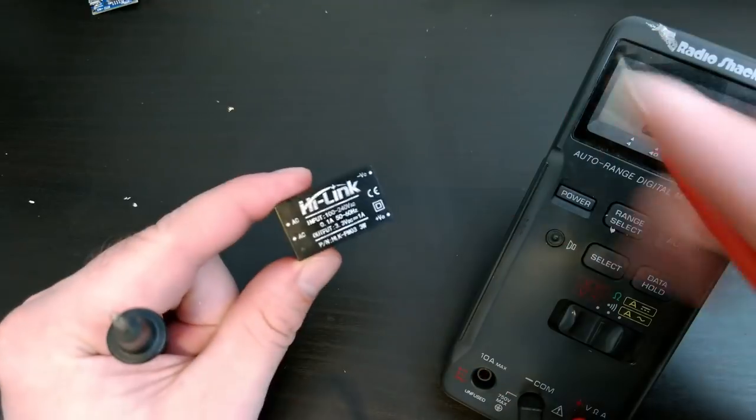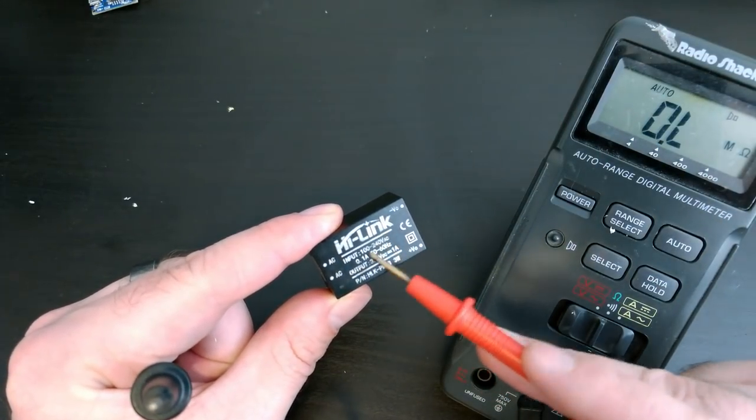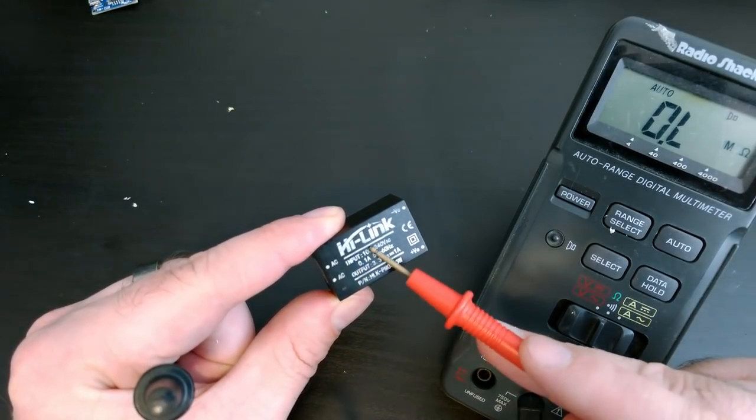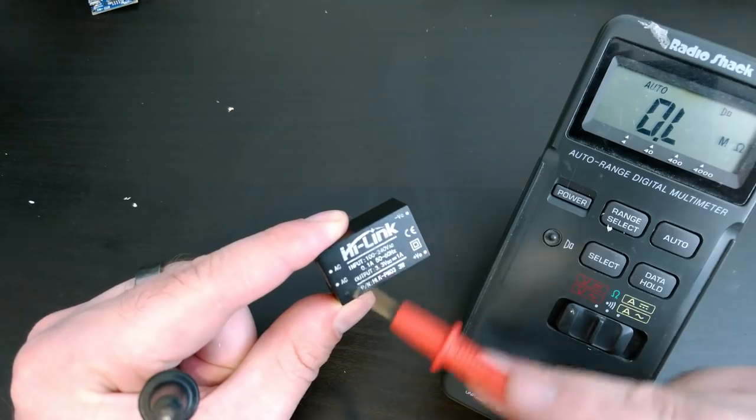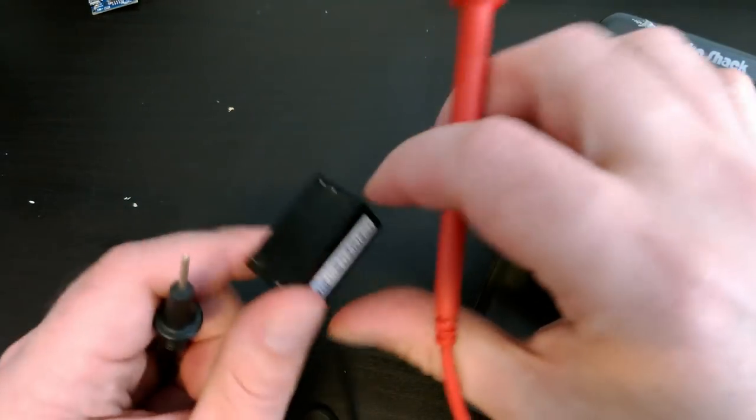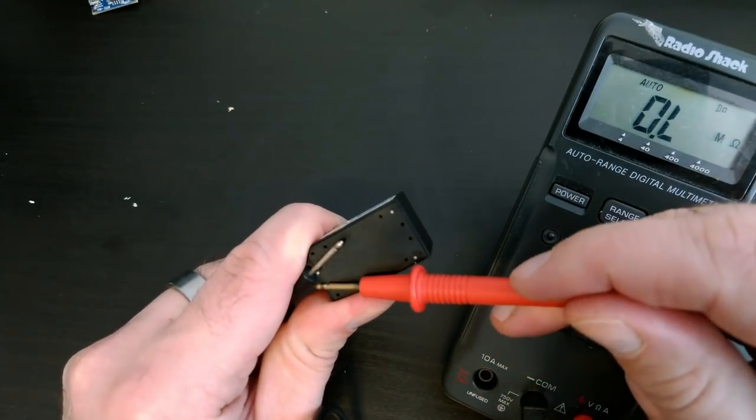One of the really important things was isolating the AC over here from the DC. And it's done with a little transformer. So there's only current, but there's no electrical connection between the two sides.